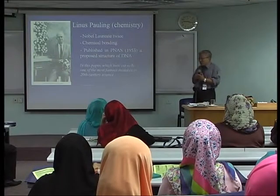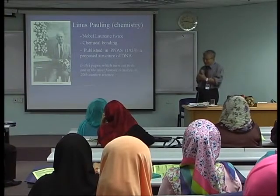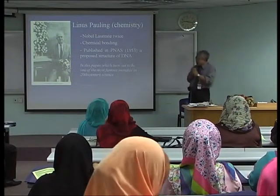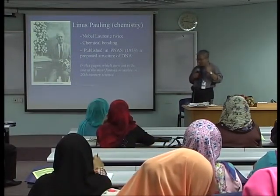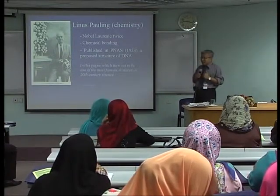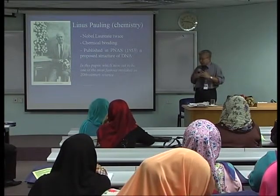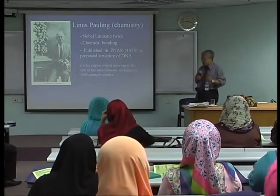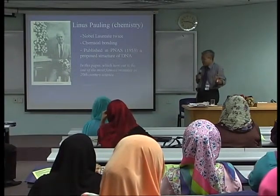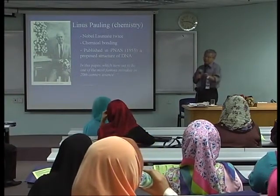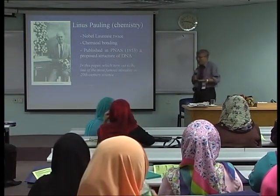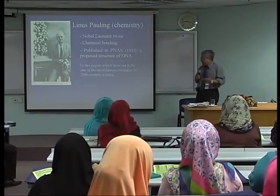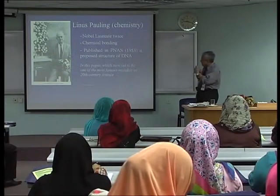Without taking the advice of his postdocs — who were also very renowned scientists, including the person who discovered conjugation in bacteria, also a Nobel laureate — Pauling was so determined to be the first one. He published in PNAS in 1953 because he knew there was another group in Britain, Francis Crick and J.D. Watson, doing the same work.